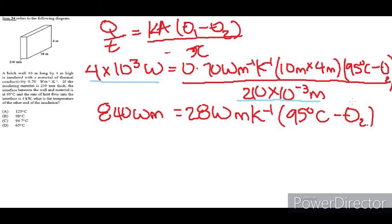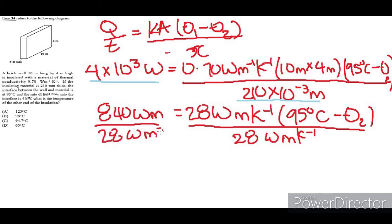Now seeing that this bracket means it's a distributive equation here, we'll divide both sides by 28 watt meter per kelvin. So 28 watt meter per kelvin. It should give you 30. Now we just flip this so it will just be kelvin now, and that's going to be equal to 95 degrees Celsius minus theta 2.